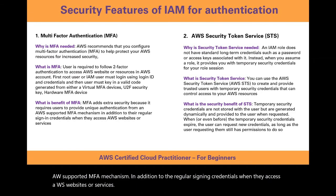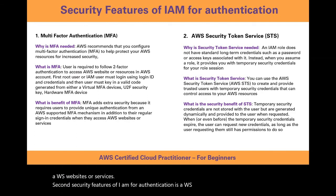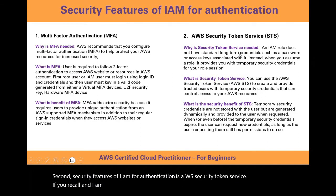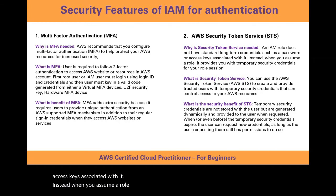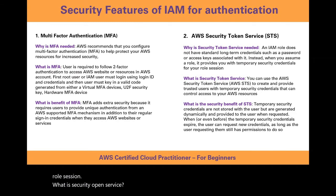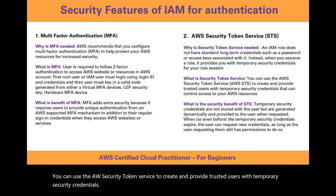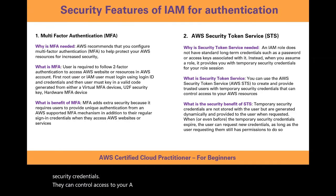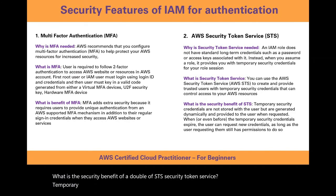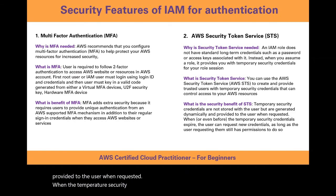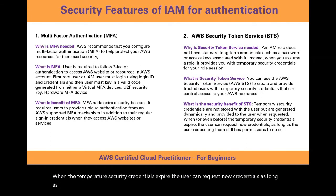The second security feature of IAM for authentication is AWS Security Token Service. An IAM role does not have standard long-term credentials such as a password or access keys associated with it. Instead, when you assume a role, it provides you with temporary security credentials for your role session. You can use the AWS Security Token Service to create and provide trusted users with temporary security credentials that can control access to your AWS resources. Temporary security credentials are not stored with the user, but are generated dynamically and provided to the user when requested. When the temporary security credentials expire, the user can request new credentials as long as the user requesting them still has permissions to do so.